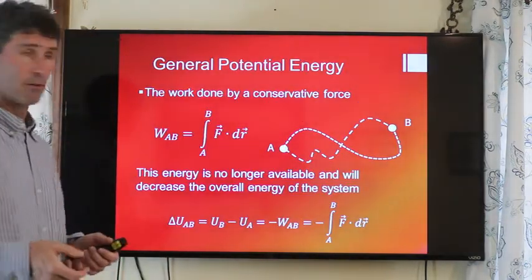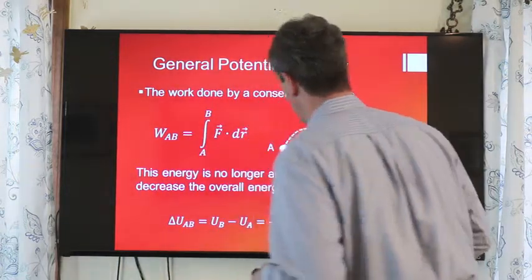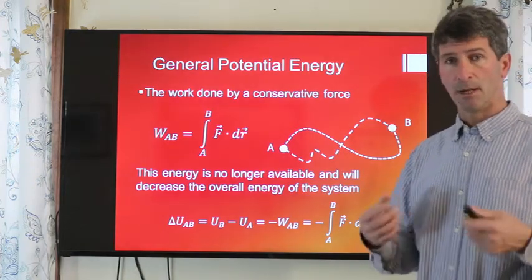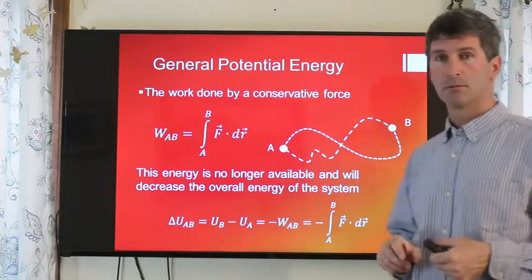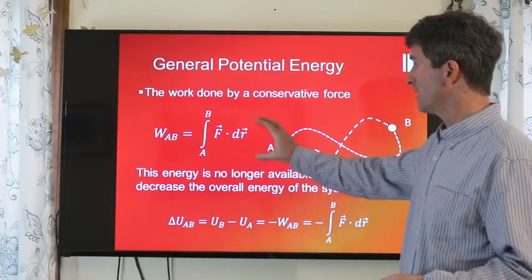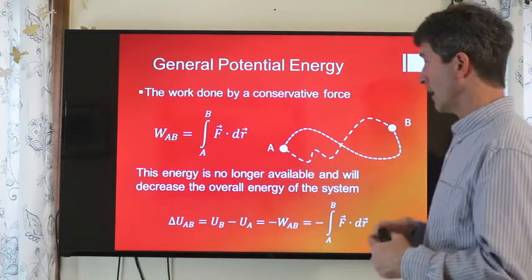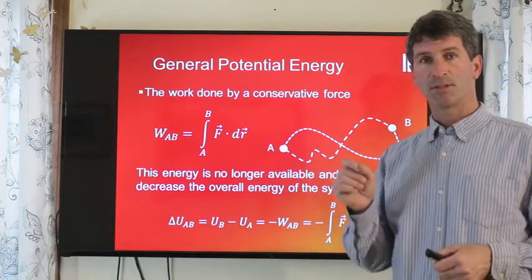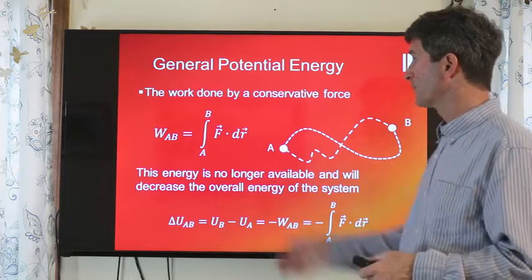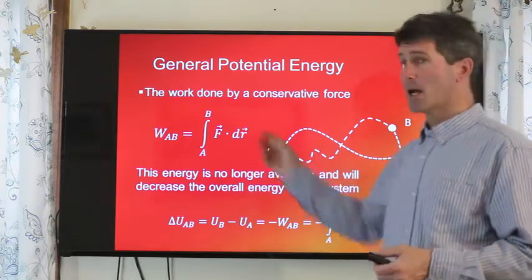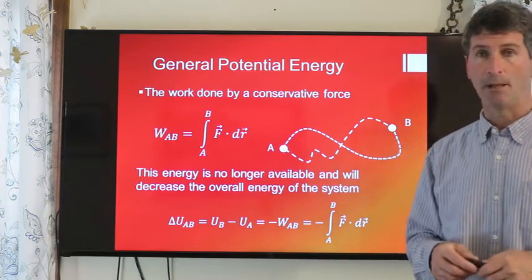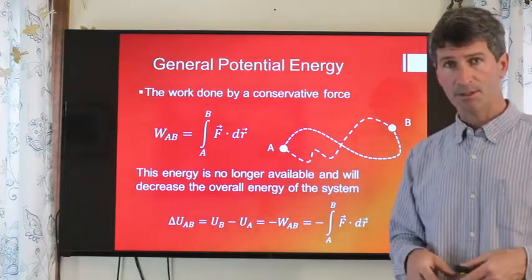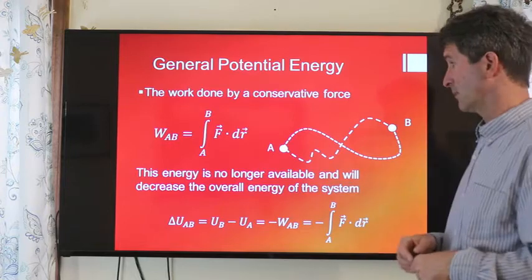Let's look at the general equation for potential energy. The change in potential energy is equal and opposite to the work done by the conservative field. Our general equation for work is the integral of F dot dr. F is our force — a vector with direction and magnitude. dr is some infinitesimal displacement along a path. We integrate this, and the dot product involves the cosine of the angle between the force and the infinitesimal path.